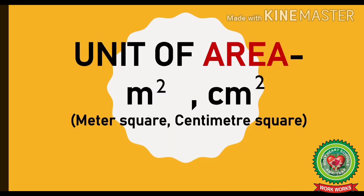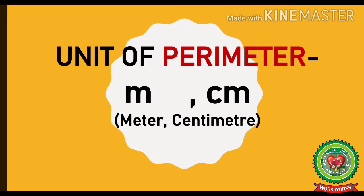Now let us discuss the units we are going to use while doing the sums. The unit of area is metre square or centimetre square. The unit of perimeter is metre or centimetre.